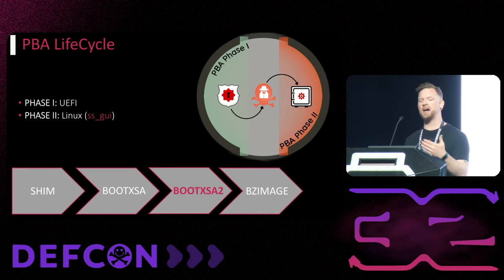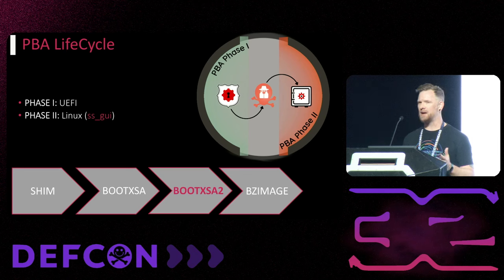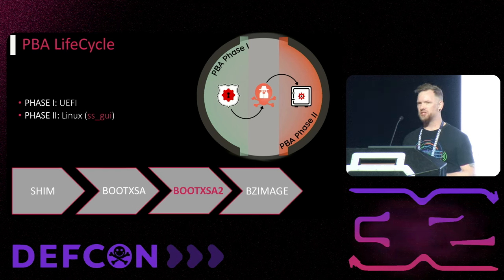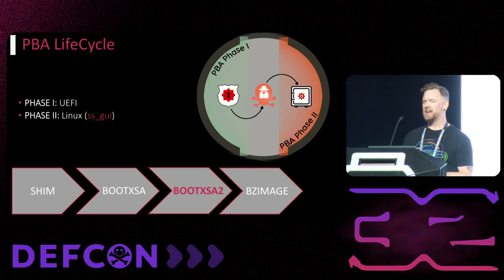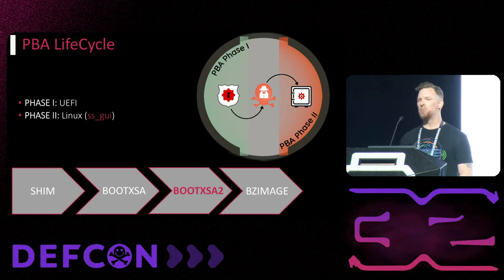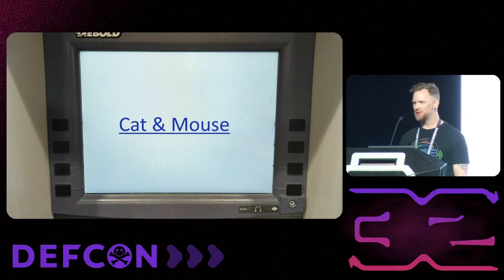Those 2,500 files are then used to unlock the TPM and recover the disk encryption key. Unfortunately, ATMs are equipped with Secure Boot, and the ability to modify BootXSA or BootXSA2 within UEFI is not possible, because all the UEFI binaries are digitally signed and the signature is associated to the BIOS. So in order to take advantage of the system, we need to specifically map out what files are validated as part of Phase 1, and then identify anything that's not checked but may allow redirection of the execution workflow in Linux before Phase 2 is initiated. Challenge accepted — let's play cat and mouse.